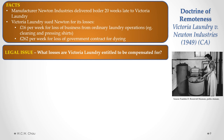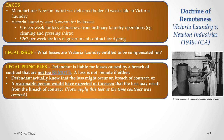Victoria Laundry claimed a loss of ordinary business income of £16 per week from their ordinary laundry operations, and also a loss of £262 per week because they lost the opportunity to get a lucrative government contract due to not having the boiler. The legal issue is what losses Victoria Laundry is entitled to be compensated for. The court's principle is that the defendant is liable for losses caused by a breach of contract that are not too remote — meaning either the defendant actually knew the loss might occur, or a reasonable person would have foreseen it. This reasonable foreseeability test is applied at the time the contract was created.